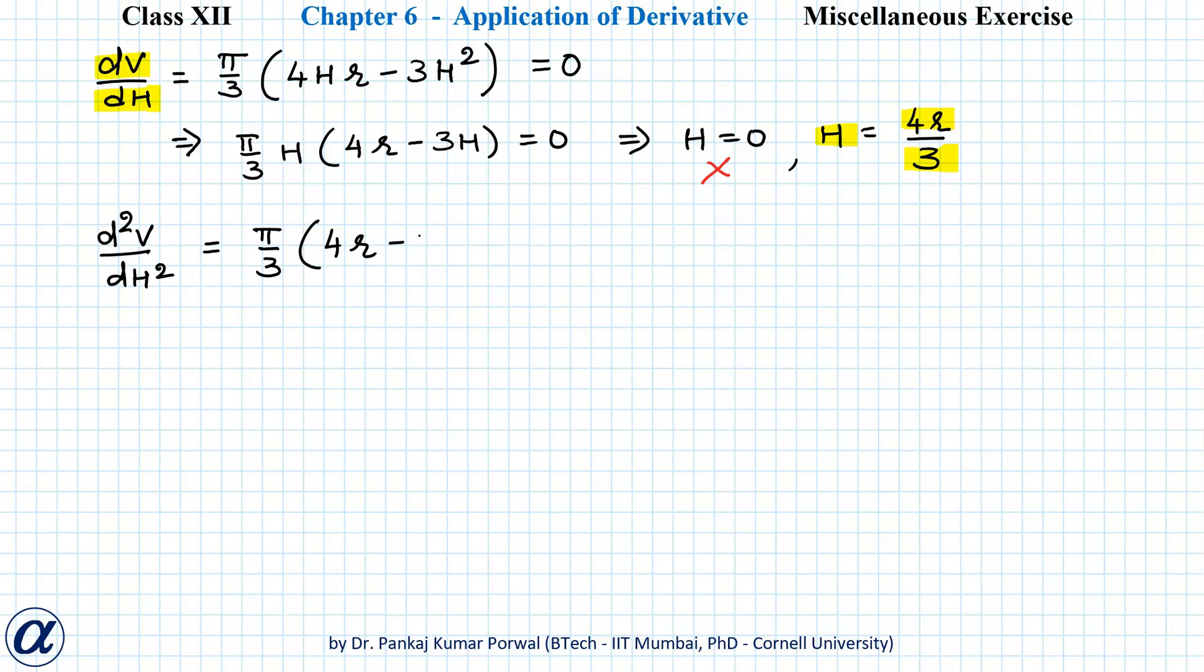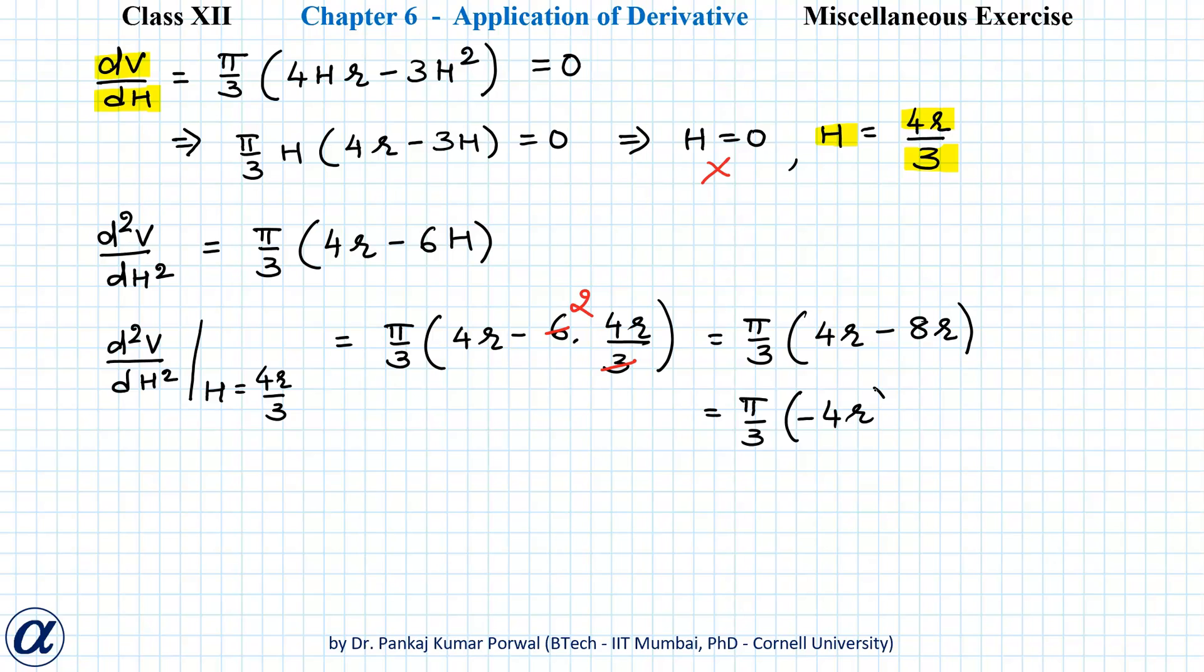And d²V/dH² at H = 4r/3 will be equal to π/3(4r - 6·4r/3). Here this 3 will cancel 6 two times so this gives me π/3(4r - 8r) and that is equal to π/3(-4r).